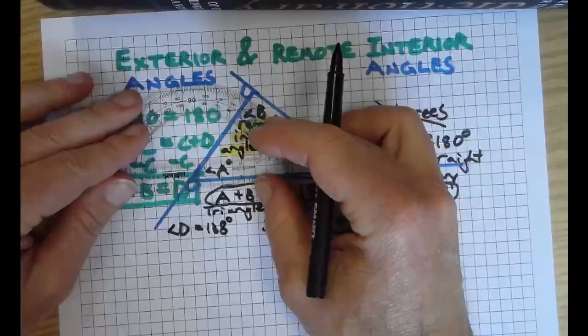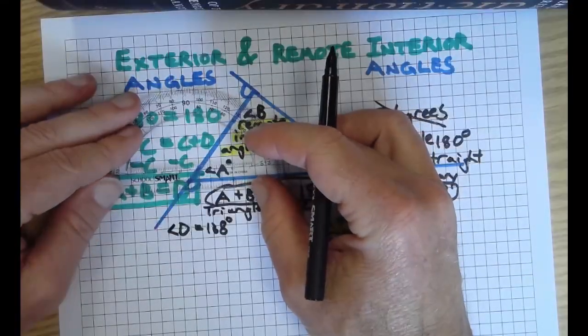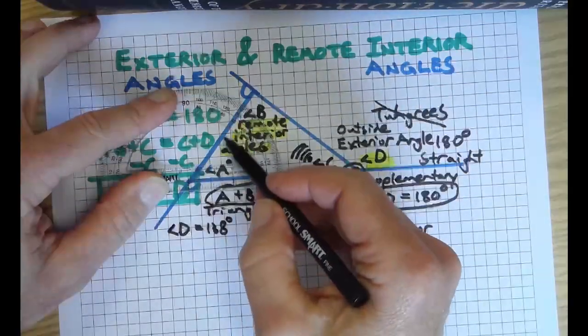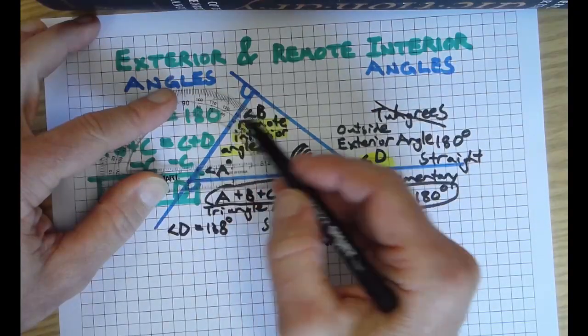Now I'm going to measure angle A because it's a remote interior angle, and I'm hoping we can agree that's, let's call it 51.